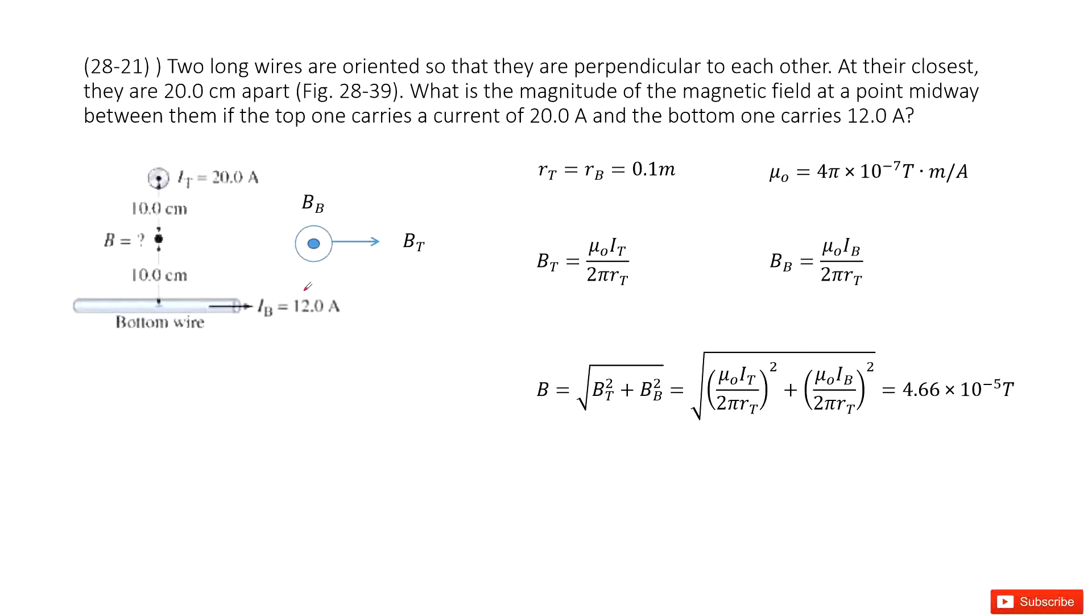So there you can see we have two long wires. They are perpendicular to each other. And then we need to find the magnitude of magnetic fields at the middle point between these two wires.